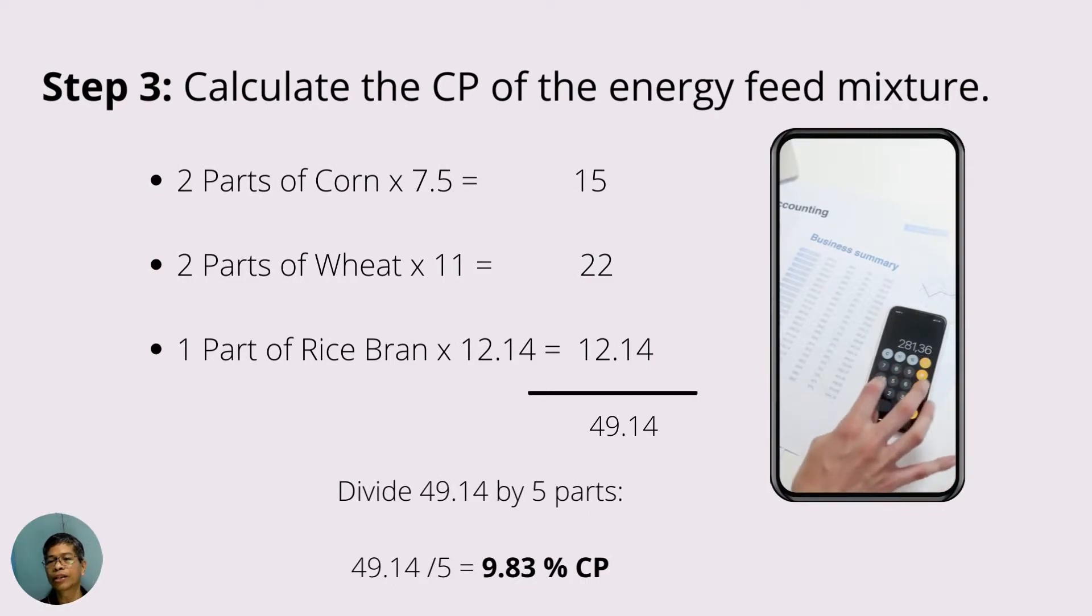The third step is to calculate the CP content of the mixture. To do that, you just multiply the part of each ingredient by its CP content. For example, we have two parts of corn multiplied by 7.5 to give us 15. For wheat, two parts times 11, that's 22, and one part of rice bran multiplied by 12.14 is 12.14.